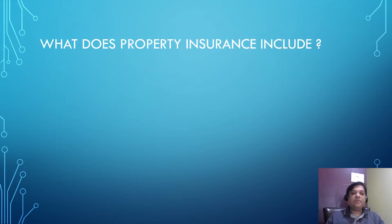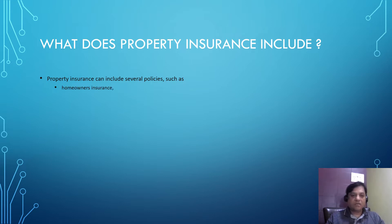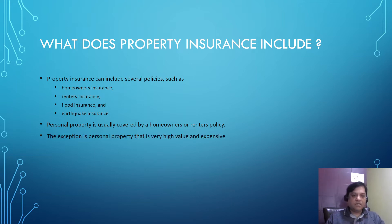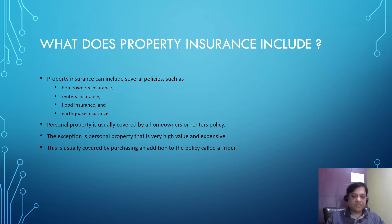What does property insurance include? Property insurance can include several policies such as homeowners insurance, renters insurance, flood insurance, and earthquake insurance. Personal property is usually covered by a homeowners or renters policy. The exception is personal property that is very high value and expensive, which is usually covered by purchasing an additional add-on to the policy called a rider.